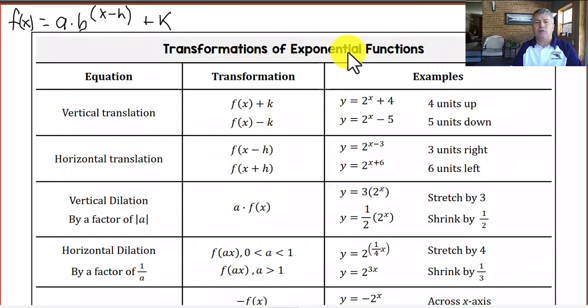Now let's take a look at transformations of exponential functions. Our standard form is f(x) equals a times b to the (x minus h) plus k, where our x is up in the exponent. Anything that's grouped with the x's is going to move us along the horizontal axis. And our a value and our k value are going to be the changes in our y's. A vertical translation is adding or subtracting k. So those are going to change our y's. Plus 4 would shift 4 units up, minus 5 would shift 5 units down.